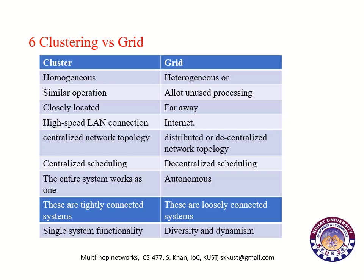Cluster versus grid computing: In a cluster, the connected computers have to be homogeneous, meaning they should have a similar kind of operating system and hardware. While in grid, the connected computers can have dissimilar operating systems and hardware — that is, grid consists of heterogeneous machines. In cluster, all nodes are committed to perform a similar operation and no other operation is allowed. While in grid, the nodes have allowed their unused processing resources and storage capabilities for the grid computing network.